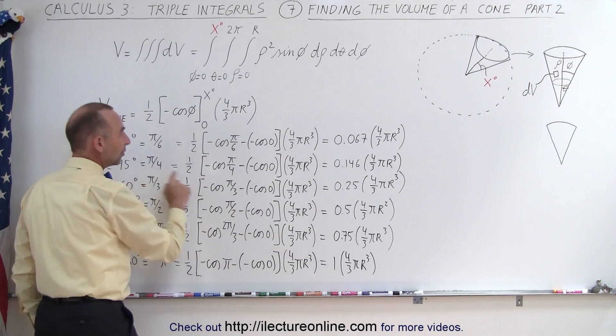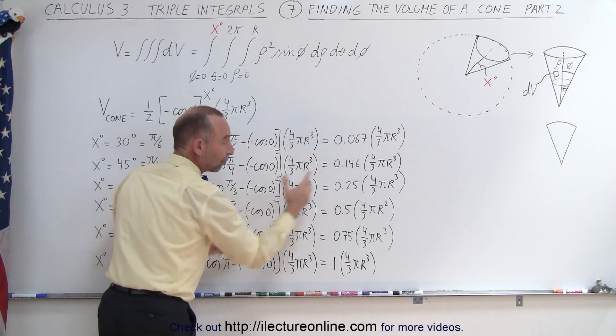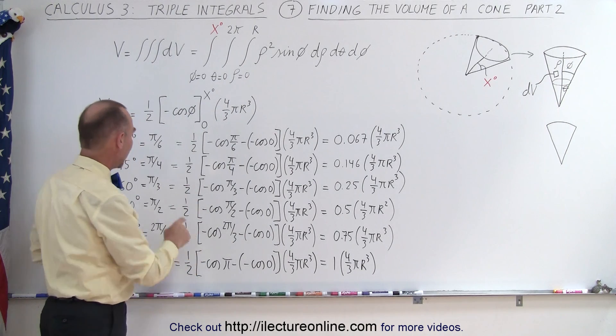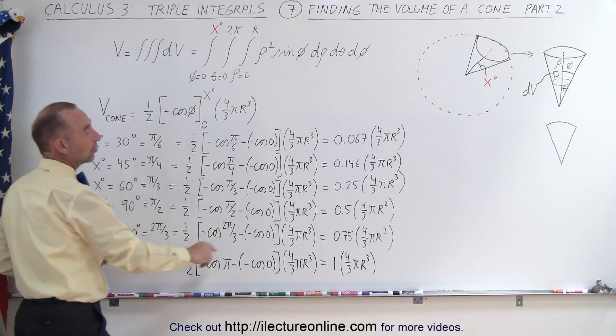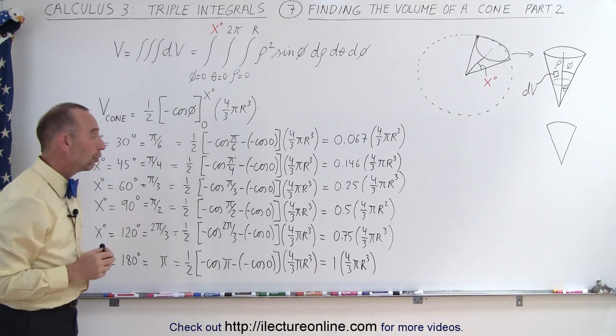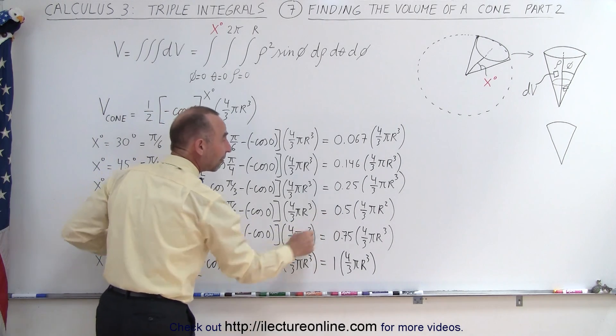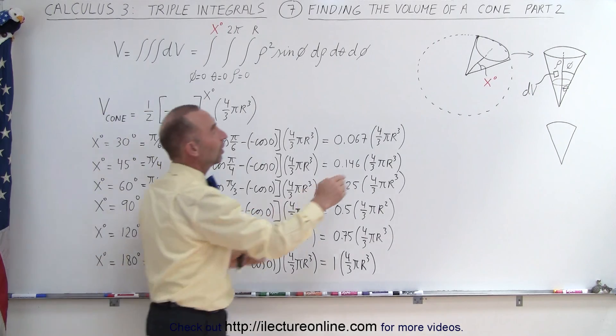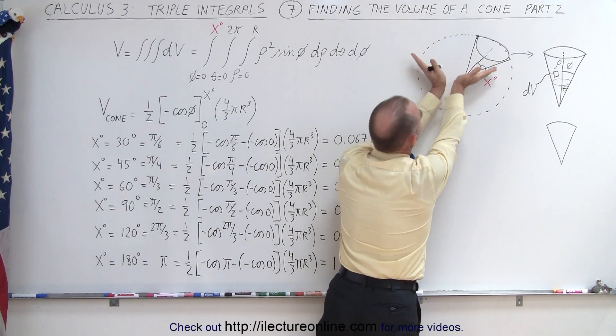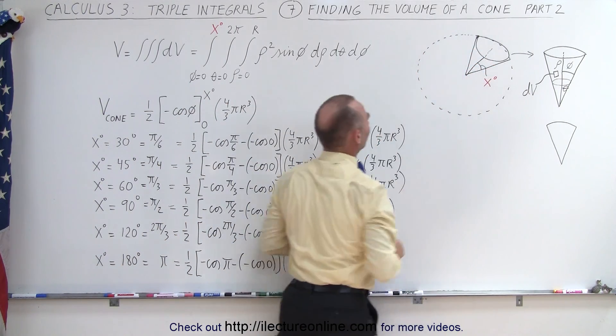Notice at 45 degrees the cone takes up 14.6% the total volume of the sphere. At an angle of 60 degrees the cone is one-quarter the volume of the whole sphere and at 90 degrees you can see that it's exactly one-half because at that point the cone is now so big that it's basically half the size of the sphere.